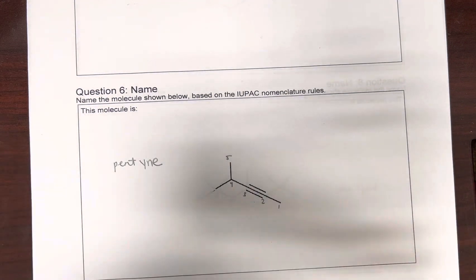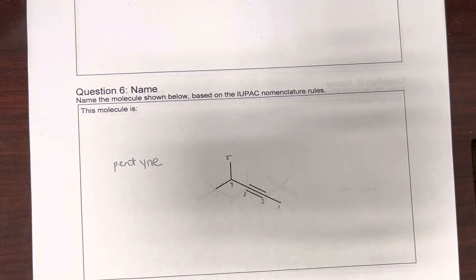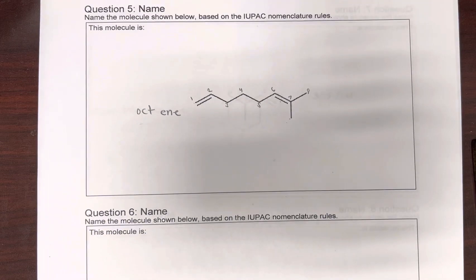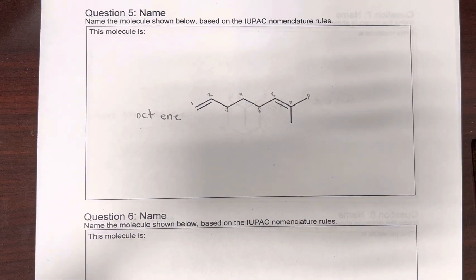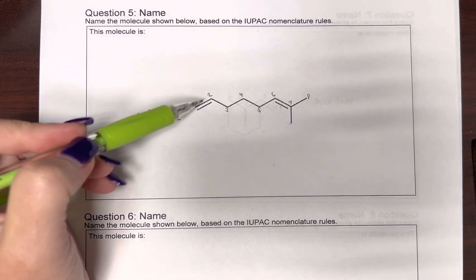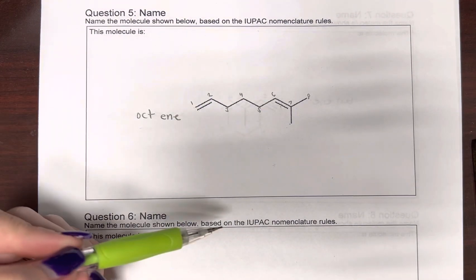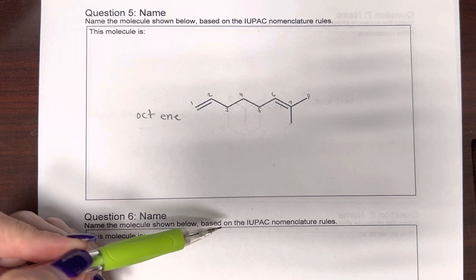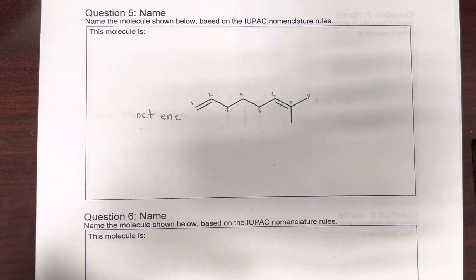If you're feeling overwhelmed by this, I promise I was too. Okay. Let's look at this one. We have two double bonds. So what we want is the lowest total number here.